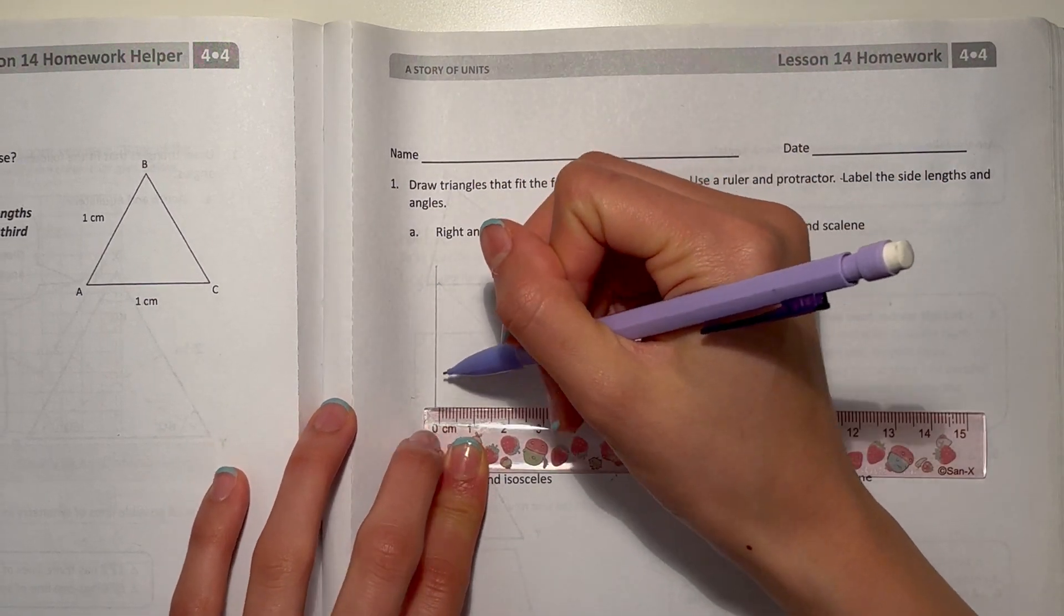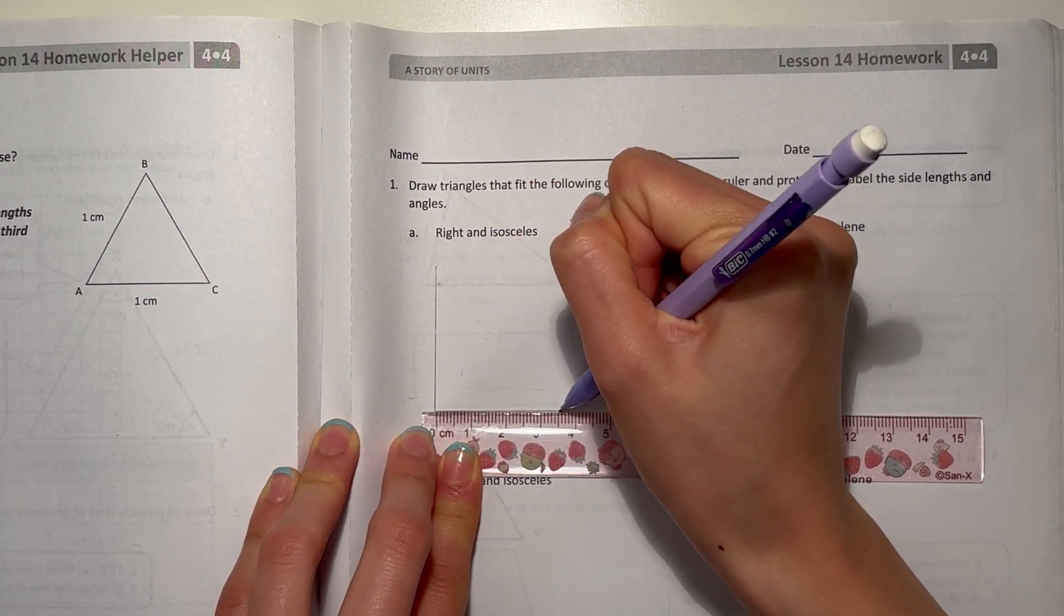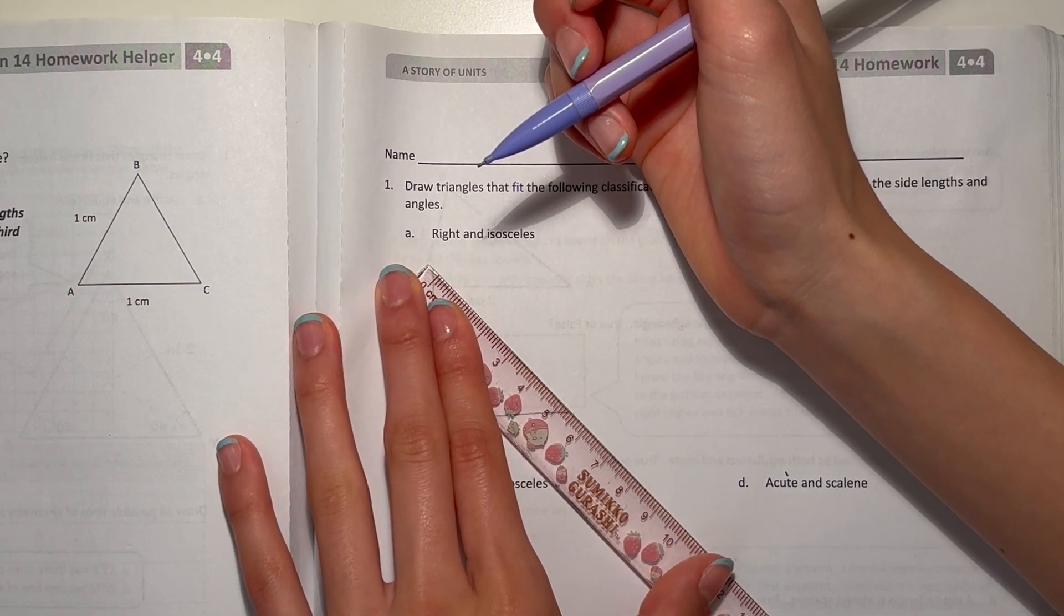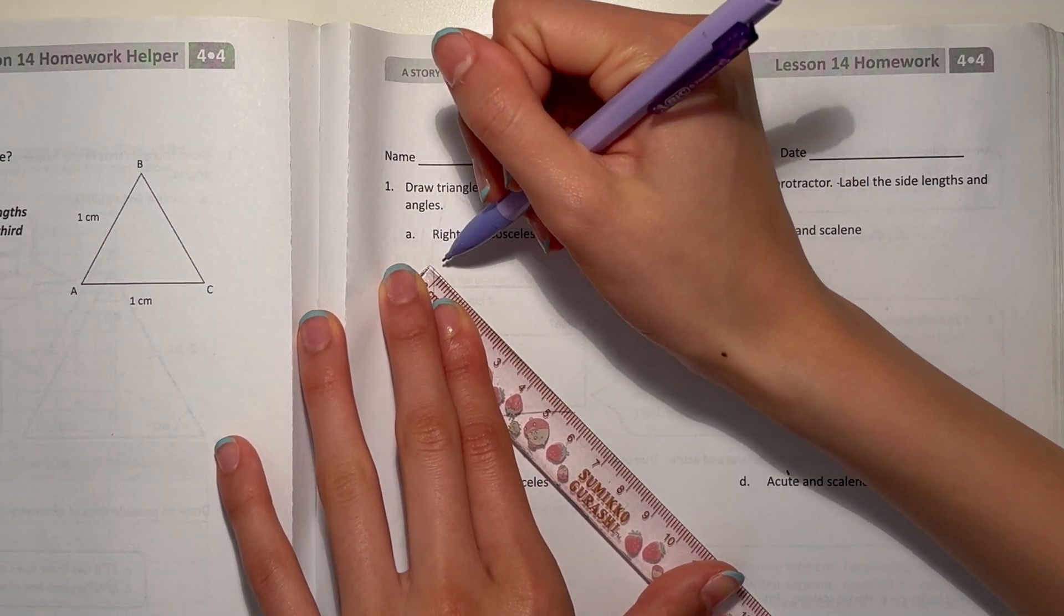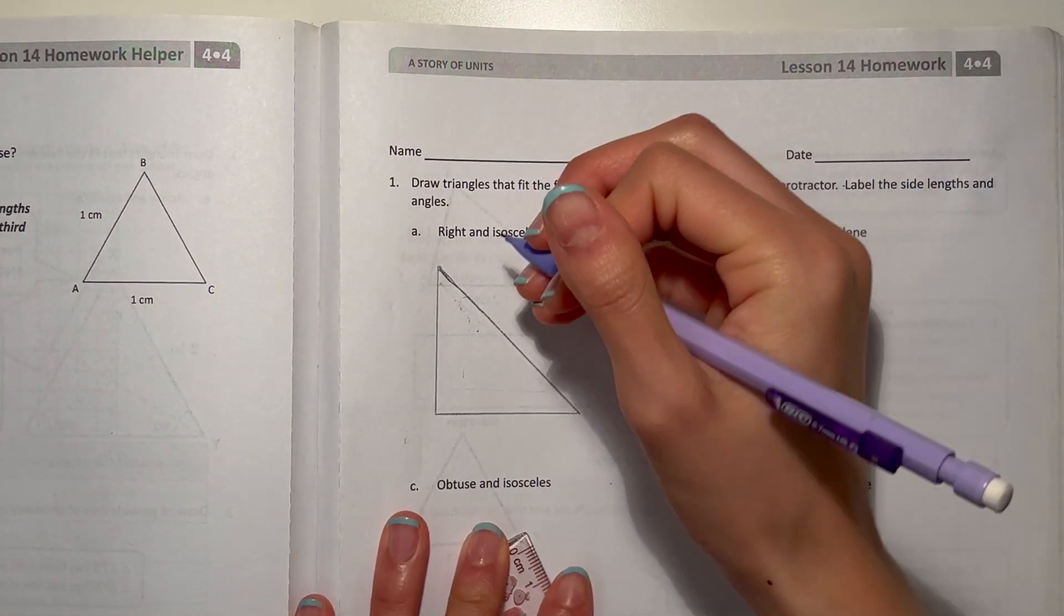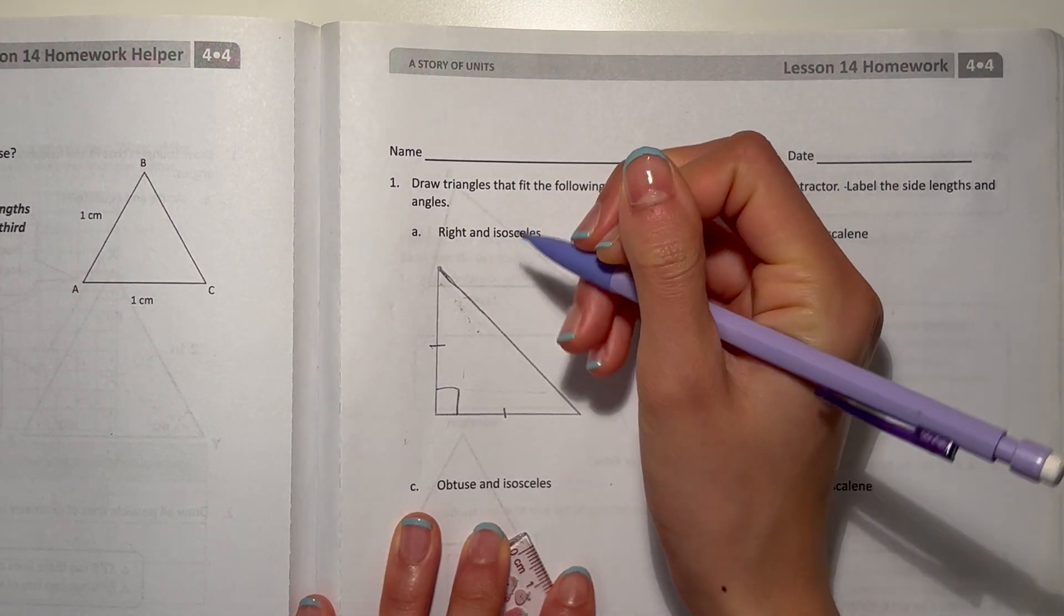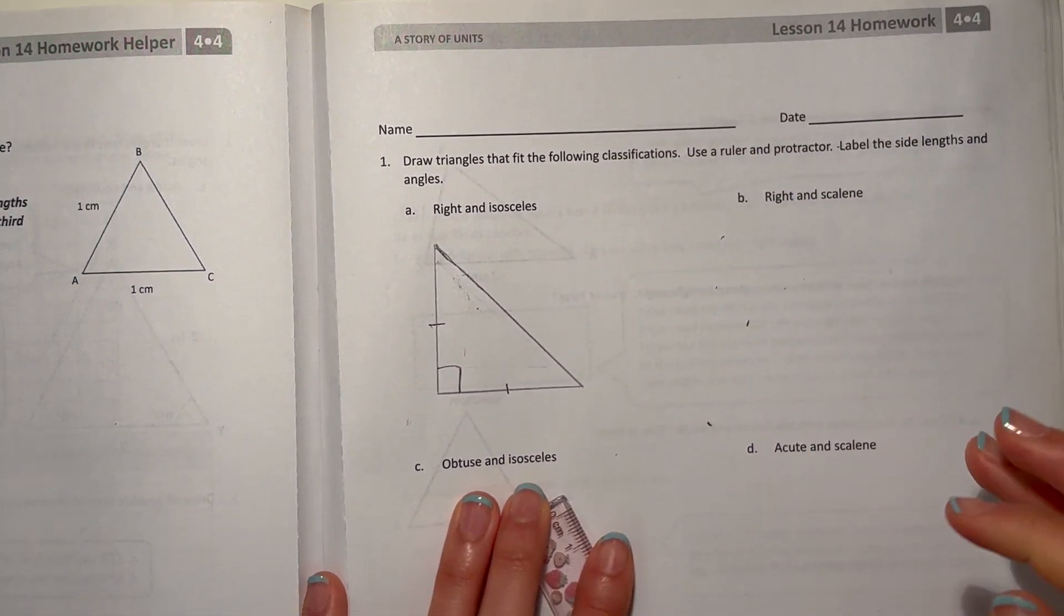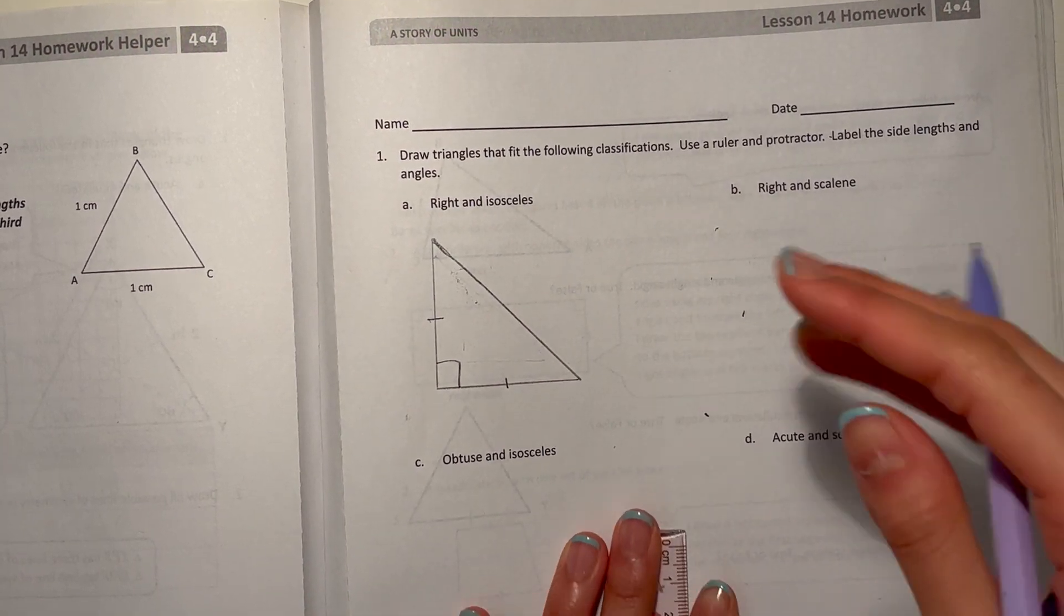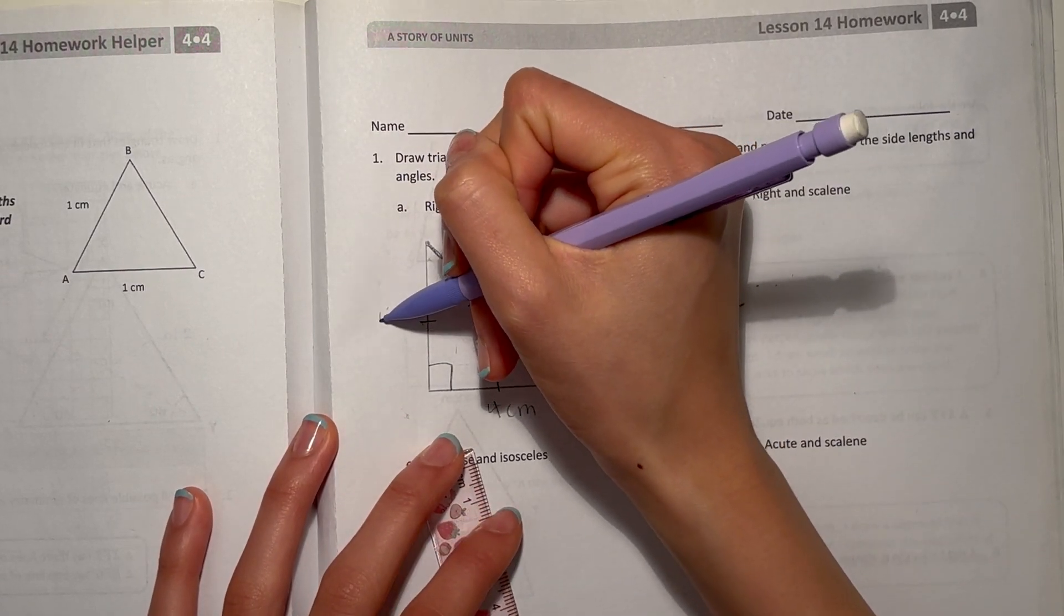So four centimeters. Here you draw a line that goes down to connect it. So this would be equal, so you can put little tick marks and draw a box to show that it's a right angle. And it says label the side lengths and angles.